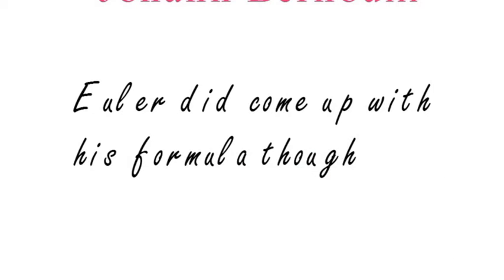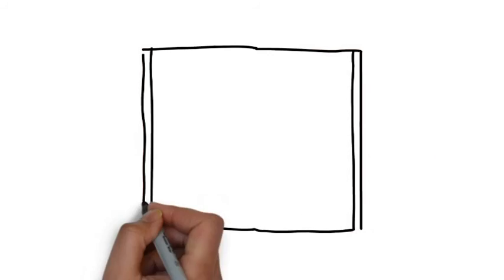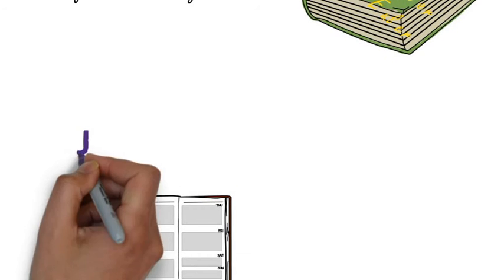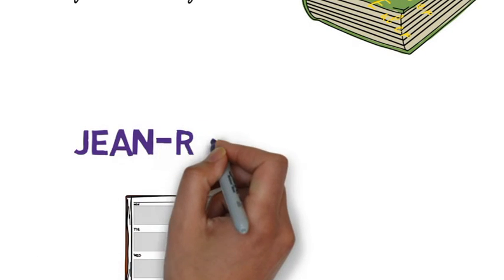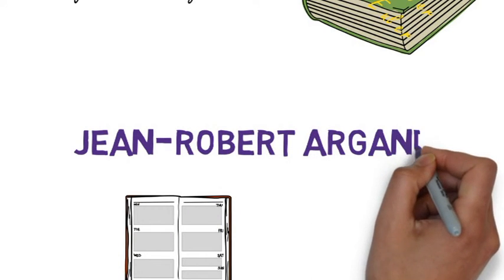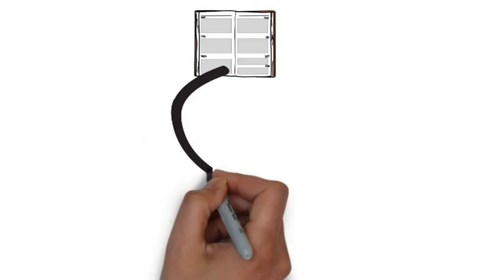The geometrical interpretation and therefore understanding of complex numbers came from Jean-Robert Argand. He was only a bookstore manager. As he was going through the books, he discovered what complex numbers truly represented.